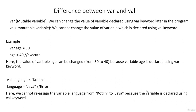First of all, we'll talk about the var keyword, which is a mutable variable. So this is a mutable variable, which means that we can change the value of a variable declared using the var keyword later in our program.